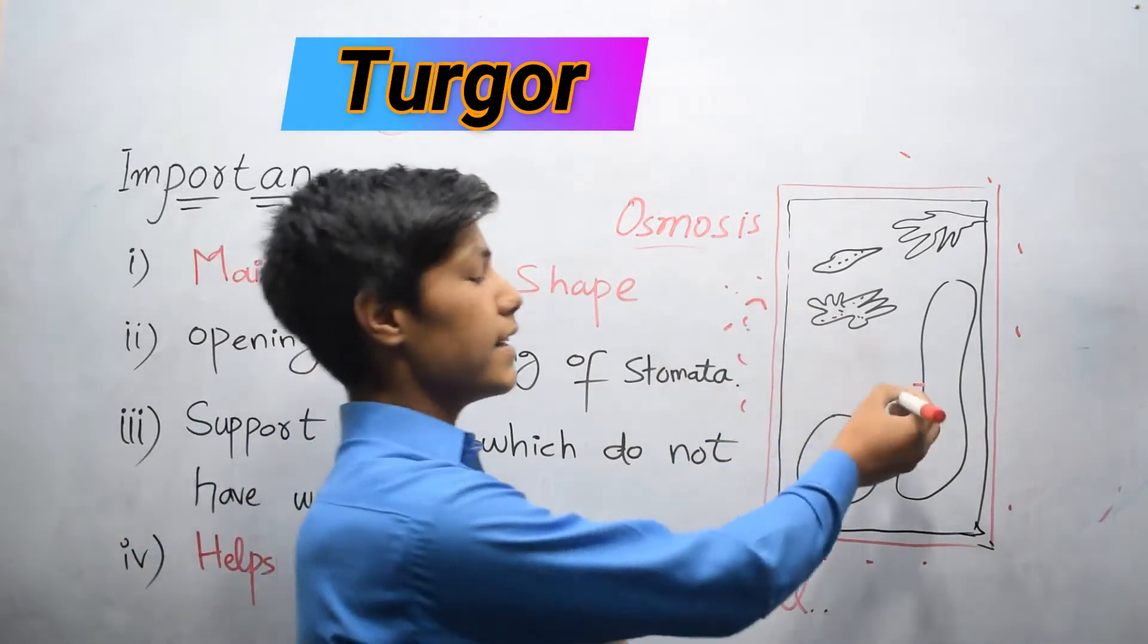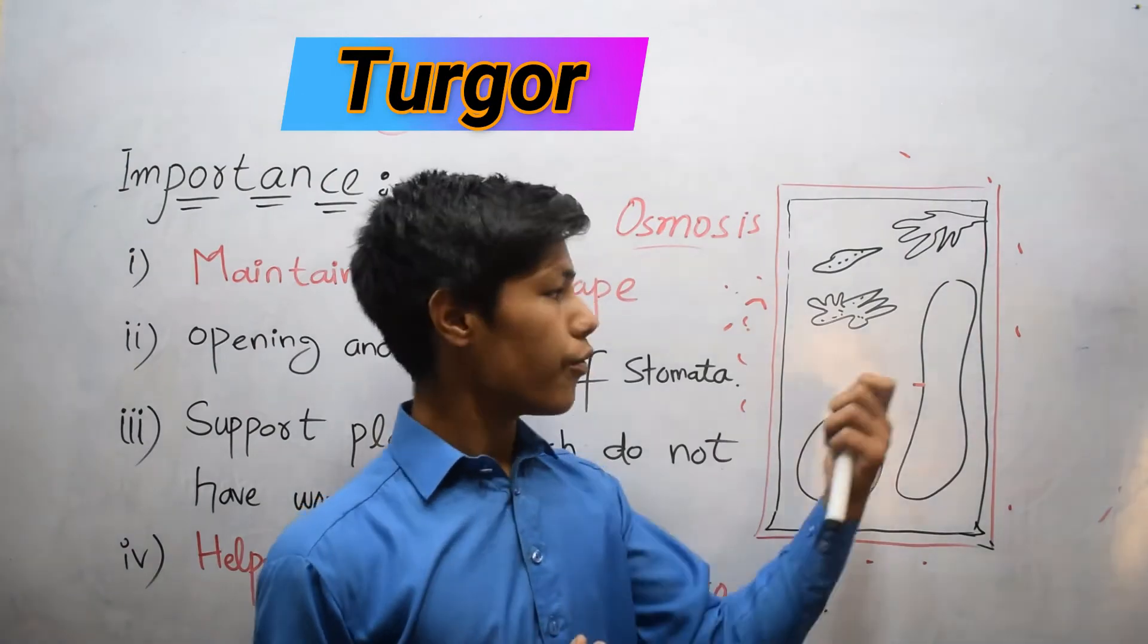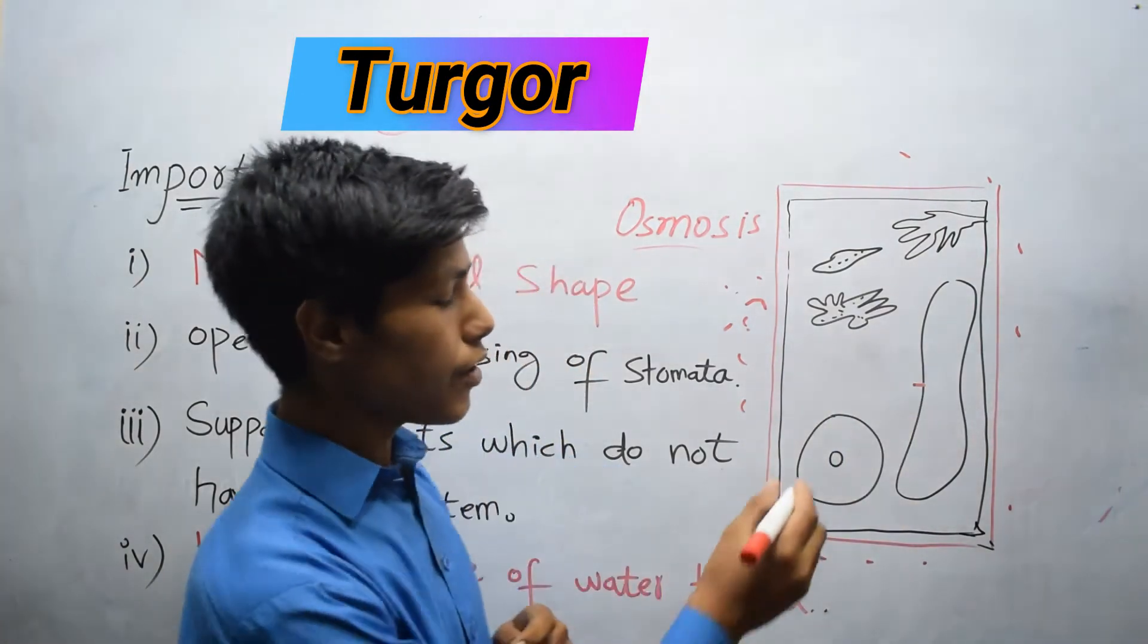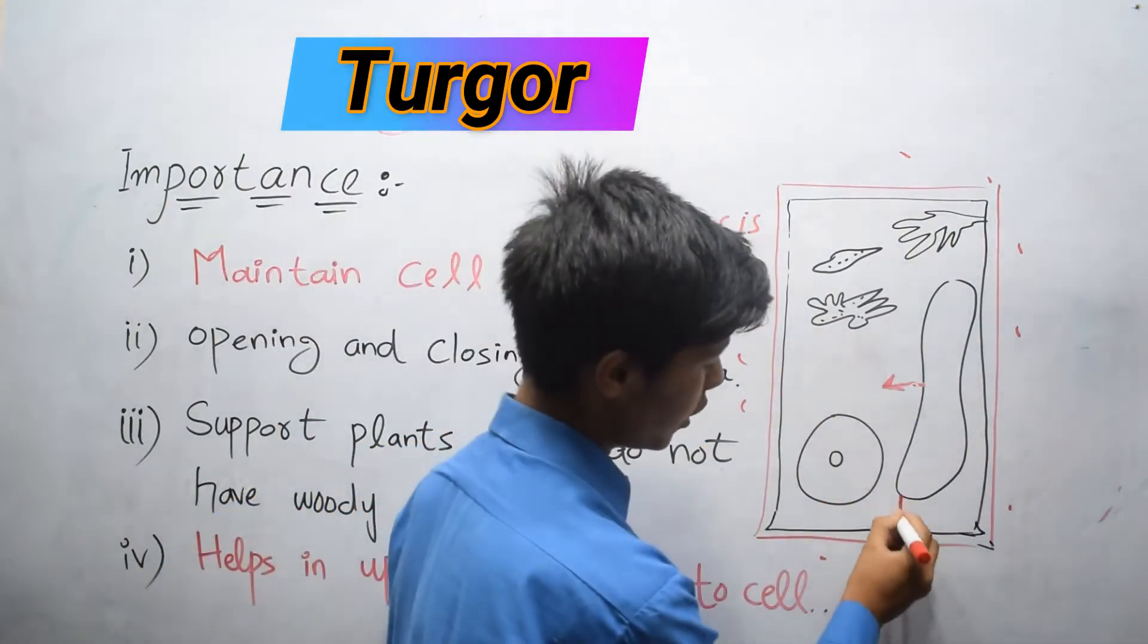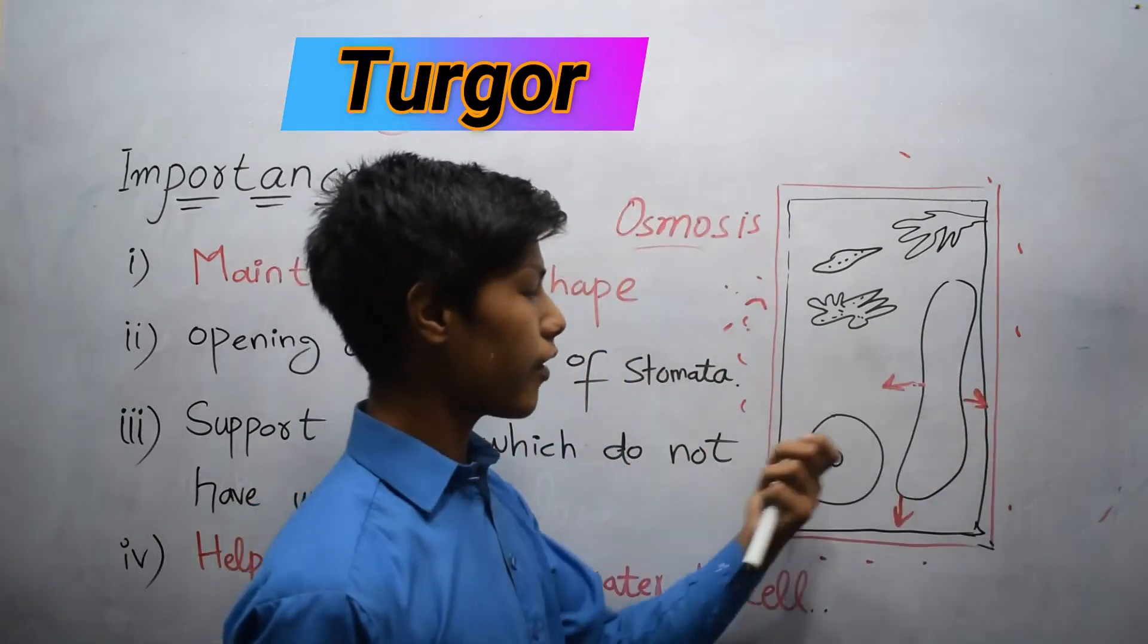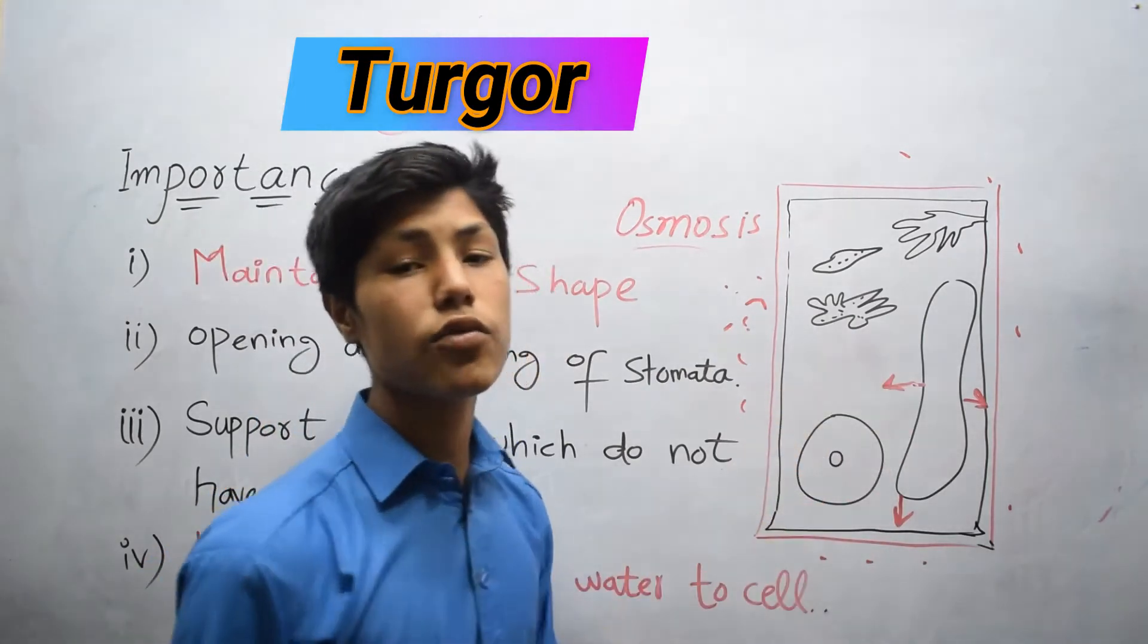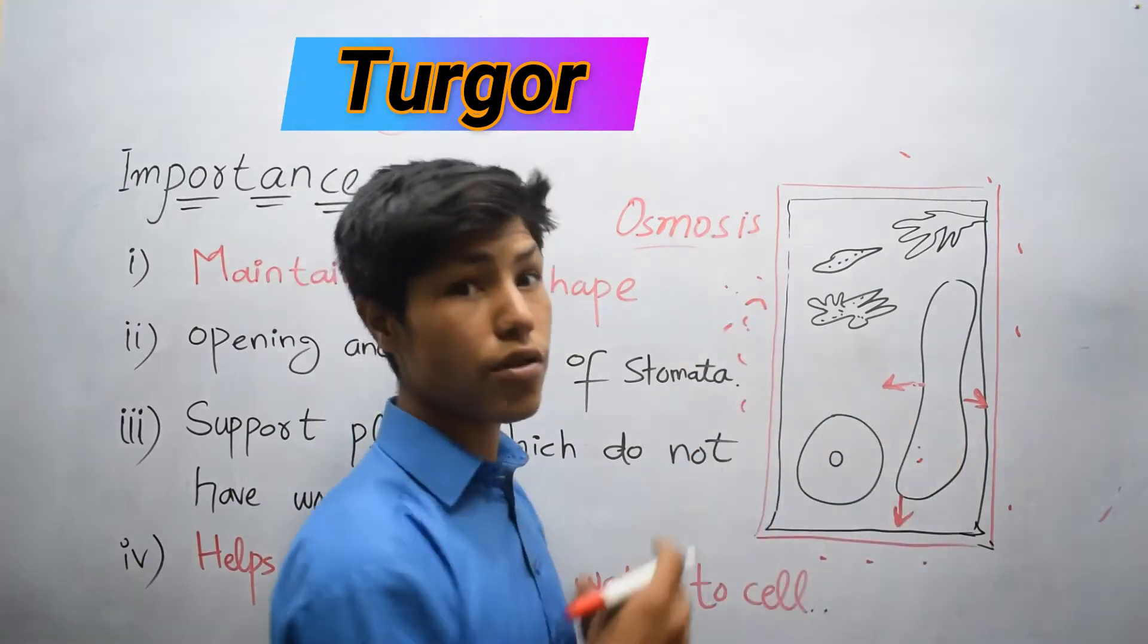So when the water enters into vacuole, it increases in size and pushes the cell content into walls. It also pushes here, the pressure. For example, mitochondria, ribosome, nucleus - it moves toward the cell wall due to increase in size of vacuole.